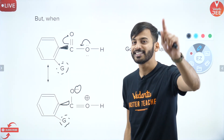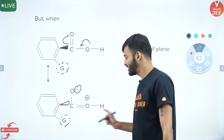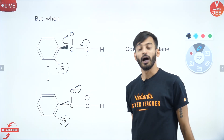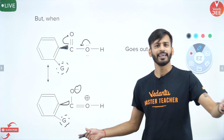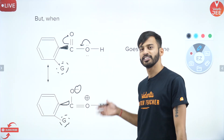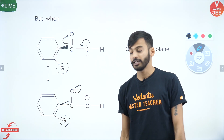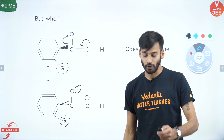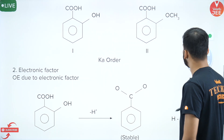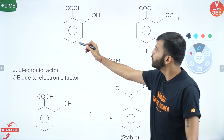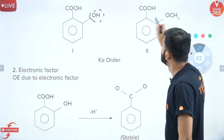That's why if you have a group, irrespective of its nature, at the ortho position in a benzoic acid, the acidic strength is surely going to increase. Students understood this — steric inhibition of resonance is what this is called. But then a question came up: if two compounds are both showing ortho effect, which one is more acidic?